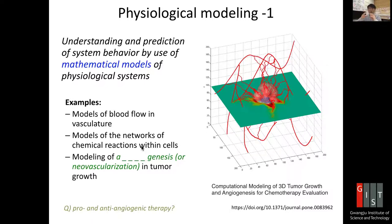We also want to model the networks of chemical reactions within a cell. Inside a single cell there are inputs from outside signals, a nucleus, and from the information received the cell generates a genetic expression profile. These biochemical reactions are very complicated, but our knowledge is trying to understand them so we can target cancer cells more effectively.